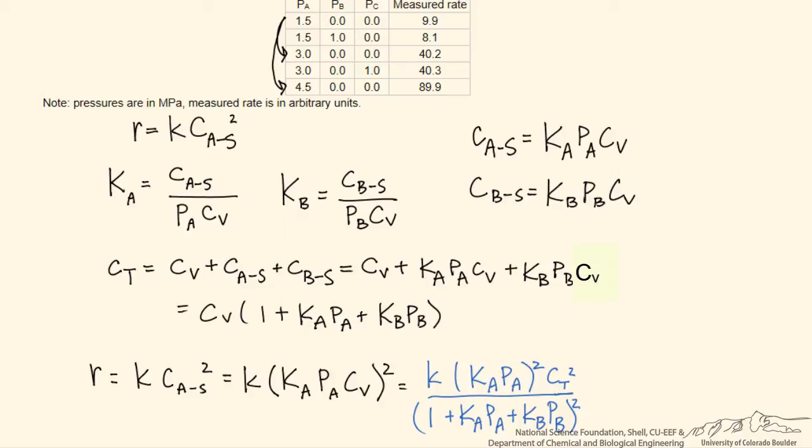We see that when the partial pressure of A goes up by a factor of 2, the rate goes up by a factor of 4. The rate goes from about 10 to about 40. When PA goes up by a factor of 3 from the top point to the bottom point, the rate goes up by a factor of 9. There's a square dependence of the rate on partial pressure.